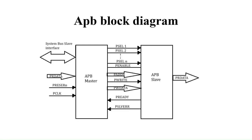In the APB block diagram, we have an APB master and APB slave. The APB master is the APB bridge, and the APB slaves are the low-frequency APB peripherals. Some signals go from master to slave, and only three signals come from slave to master: PREADY, PSLAVE error, and PRDATA. All other signals are asserted by the master. PRESETn and PCLK are global signals connected to the system bus.